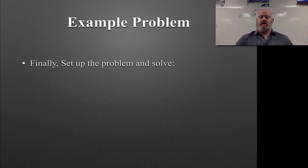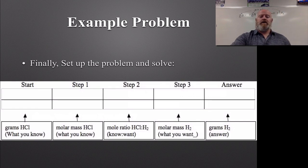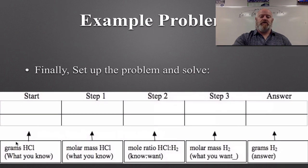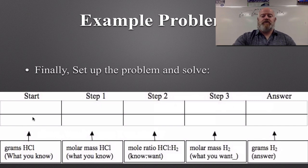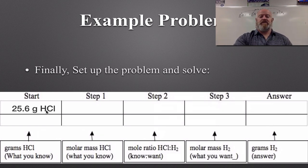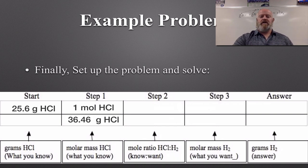Now we set up the problem and solve. It's going to take three different conversion factors. We always start with the grams of whatever we know — in this case 25.6 grams of hydrochloric acid. We put in our molar masses, our mole ratio, and then our molar mass for the product, and solve for our answer. The key idea is: do whatever conversions you can to get to moles as fast as possible.